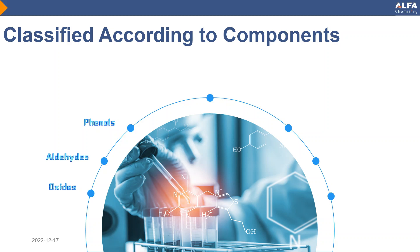Alcohols: The bactericidal mechanism involves denaturing target proteins and interfering with metabolism and is effective against bacteria but not spores, fungi, and viruses, using ethanol, isopropanol, etc. Alcohol is a disinfectant with medium efficiency and can only be used for general disinfection.